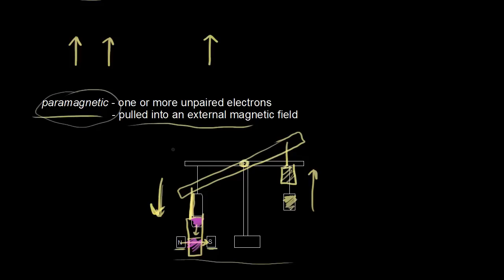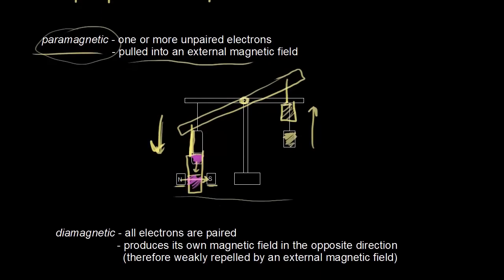For diamagnetic substances, all electrons are paired — spin up paired with spin down — so the magnetic fields cancel. A diamagnetic sample is not attracted to an external magnetic field. In fact, it produces its own magnetic field in the opposite direction, so it is actually weakly repelled by an external magnetic field.